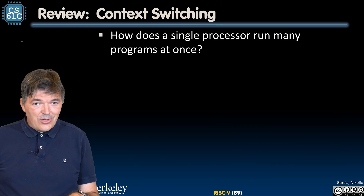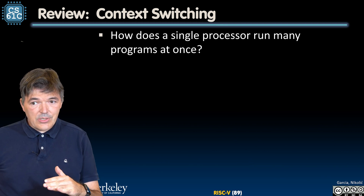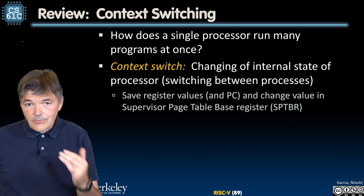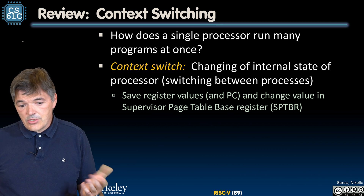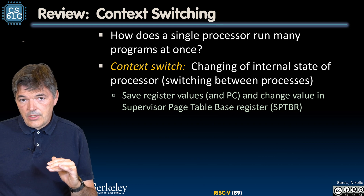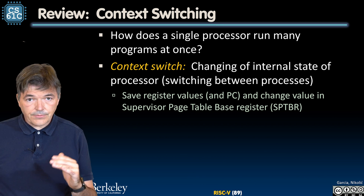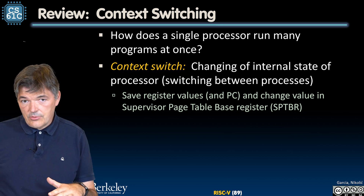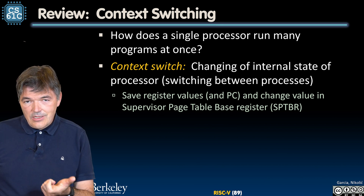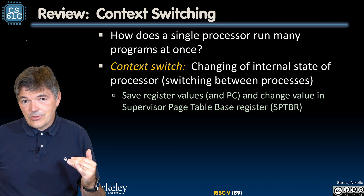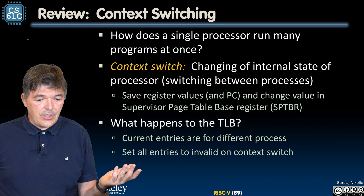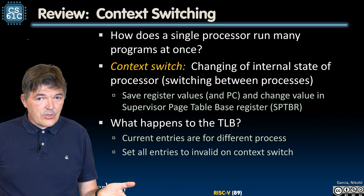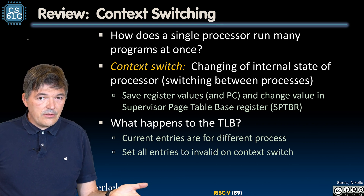Finally, we now know how to define what happens during a context switch. How does a processor run many programs at once? It uses context switches, typically triggered by a timer or an external event like a page fault. On a context switch, the operating system changes the internal state of the processor to switch between processes. It has to save all the registers including the PC, and change the value in the supervisor page table base register — SPTBR — so that it points to a different set of page tables. What happens to the TLB? It's invalid; it corresponds to the old process, so it needs to be updated. After this, we will evaluate the performance of our virtual memory system and wrap up the module before moving on to I/O.